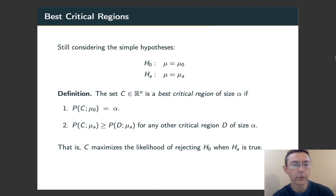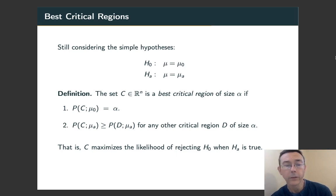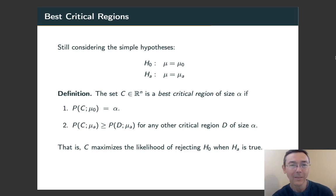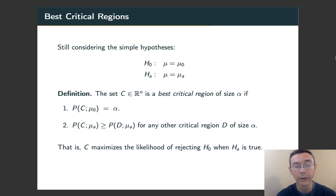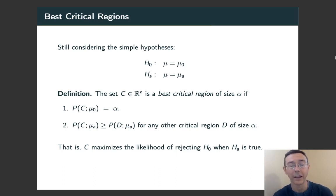So we're ready to define a best critical region. We're still considering those simple hypotheses, mu equal mu-naught and mu equal mu-A. A best critical region of size alpha is a region of size alpha — so the probability, when the null hypothesis is true, of randomly picking a point in C is alpha — and it has to be the most powerful region. That is, for any other region D, the probability of grabbing a point in C given the alternative hypothesis is greater than for D. To say it more succinctly, C maximizes the likelihood of rejecting H0 when HA is true.